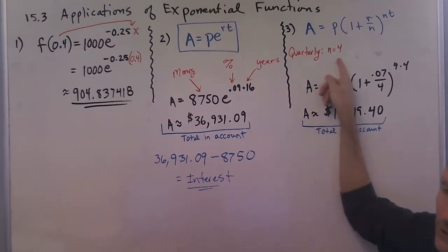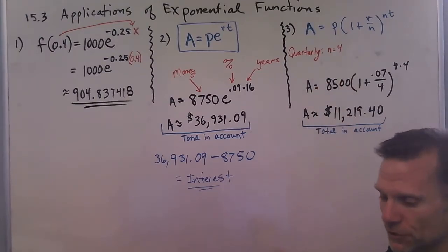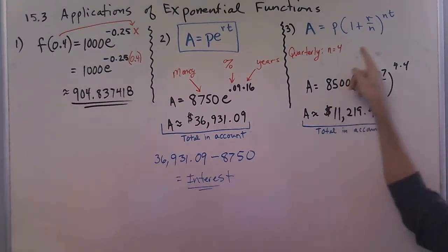For monthly, there's 12 months in a year, so it would be 12. You might have to look some of those up. The strangest one for me is semi-annually, which is 2, because biannually is also 2. So I plugged in my values here.